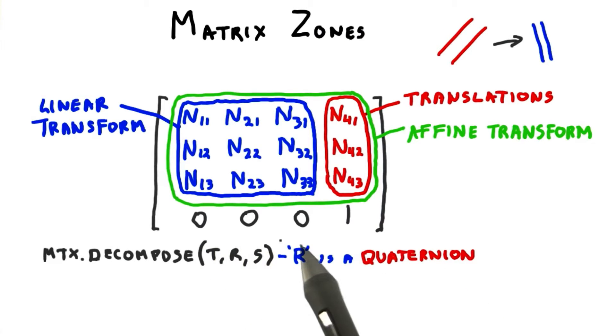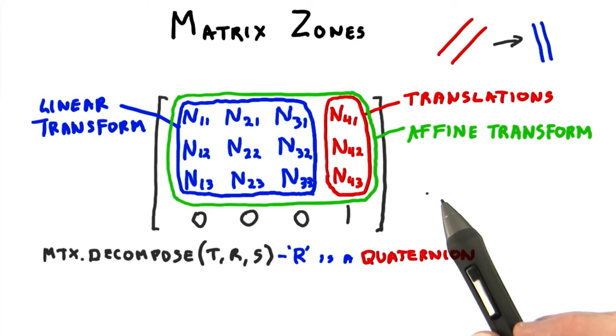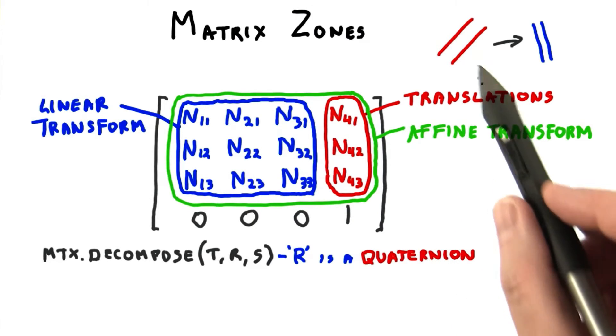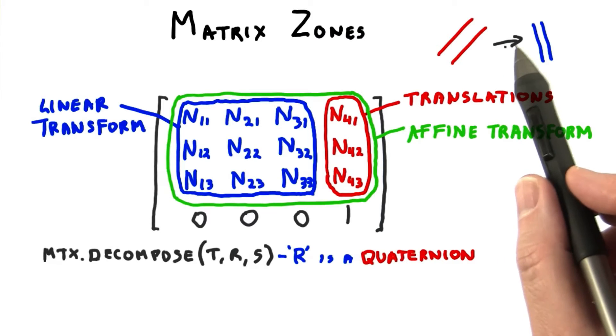Notice that the bottom row is always 0, 0, 0, 1. The transforms we covered here are called affine transforms. Parallel lines stay parallel when an affine transform is applied.